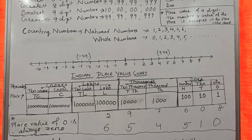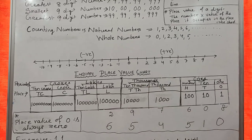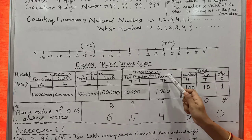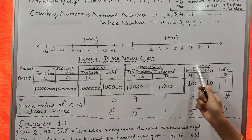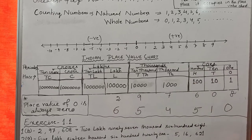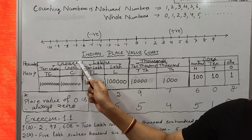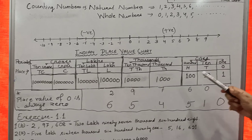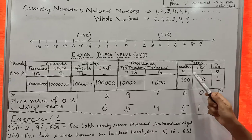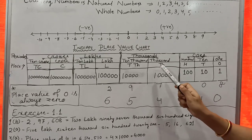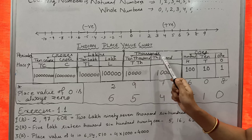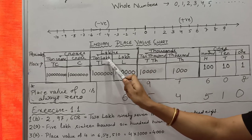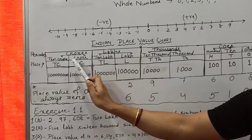Now come to the Indian Place Value Chart. The Indian Place Value Chart is divided into 4 periods. The periods are: Ones Period, Thousands Period, Lakhs Period, and Crores Period. The Ones Period is divided into 3 parts: 1, 10, 100. The Thousands Period is divided into 2 parts: 1,000 and 10,000. Similarly, Lakhs, 10 Lakhs, Crores, and 10 Crores.